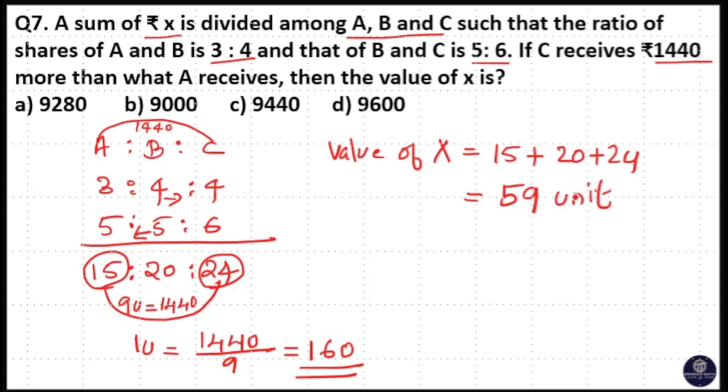59 unit is value of x. That means value of x is 59 into 1 unit value 160. Here 50 into 160 is 8000 and 9 into 160 is 9 into 16.